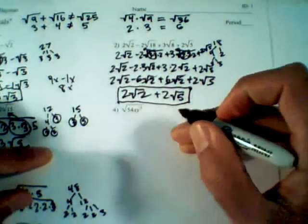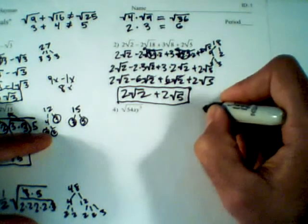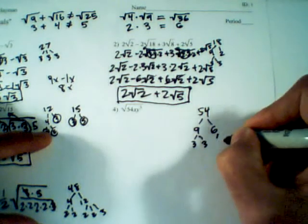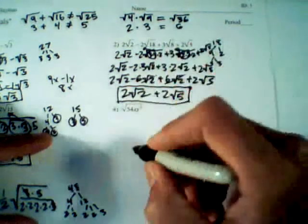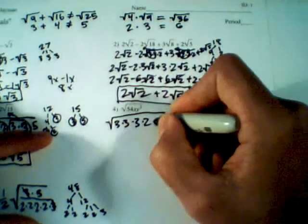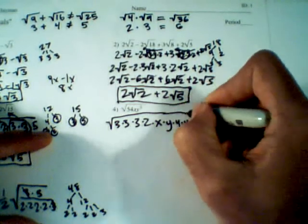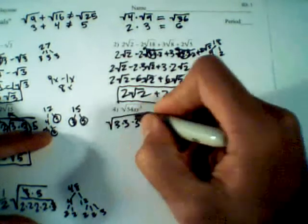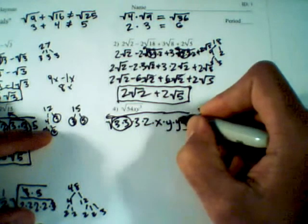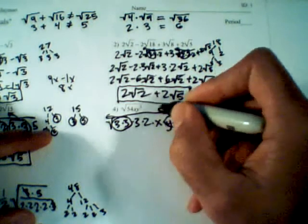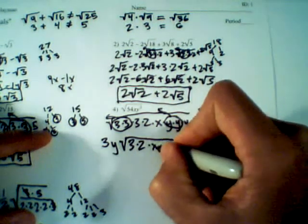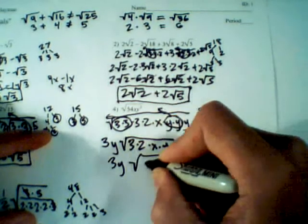Number 4 is just simplifying, but it has variables. We break down 54: 54 is 9 times 6, which is 3 times 3 times 3 times 2. So instead of root 54xy cubed, we write root of 3 times 3 times 3 times 2 times x times y times y times y. We unsquare what we can: the pair of 3s unsquares, and the pair of y's unsquares. The remaining 3, 2, x, and one y stay underneath. Our final answer is 3y root 6xy.